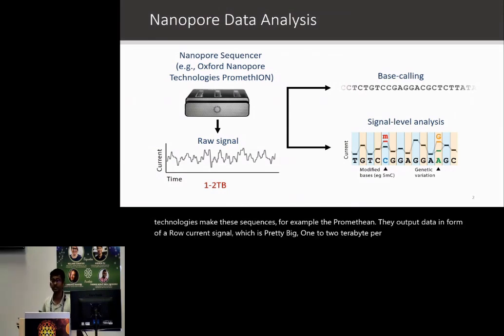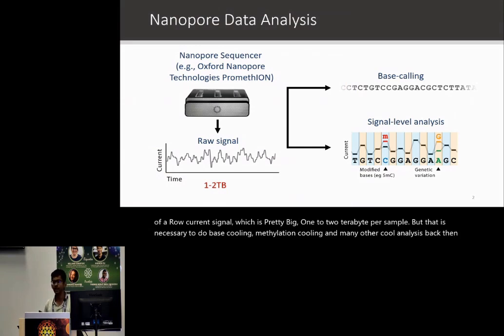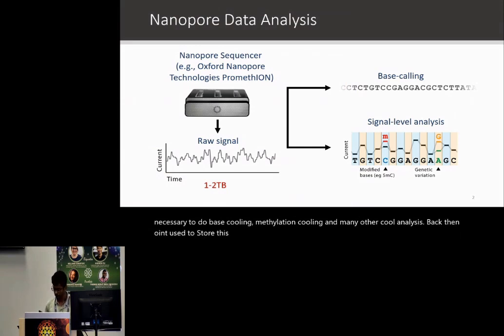That data is necessary to do basecalling, methylation calling, and many other cool analyses. Back then, ONT used to store this data in a file format called Fast5.